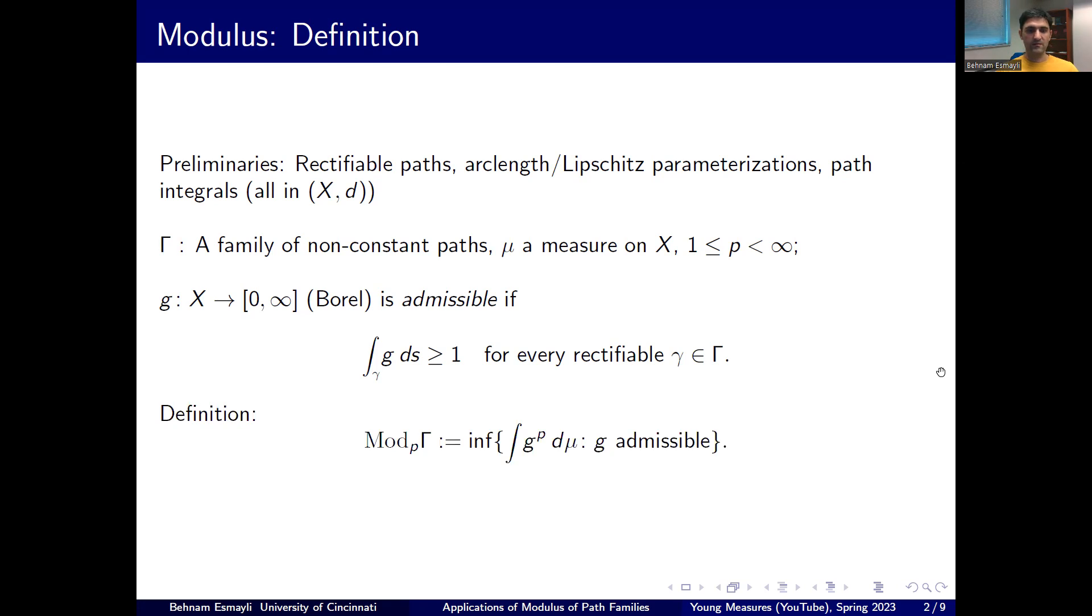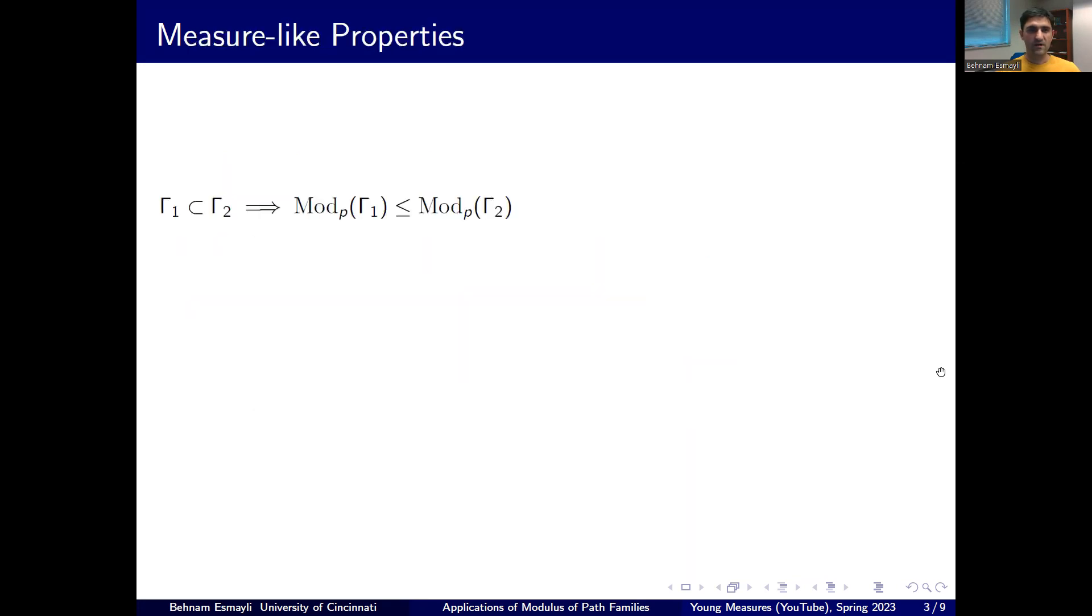And then by definition the p modulus of this family is the smallest Lp norm over all admissible functions. So we've been dealing with examples for some time in this channel, but I never mentioned some of its key properties.